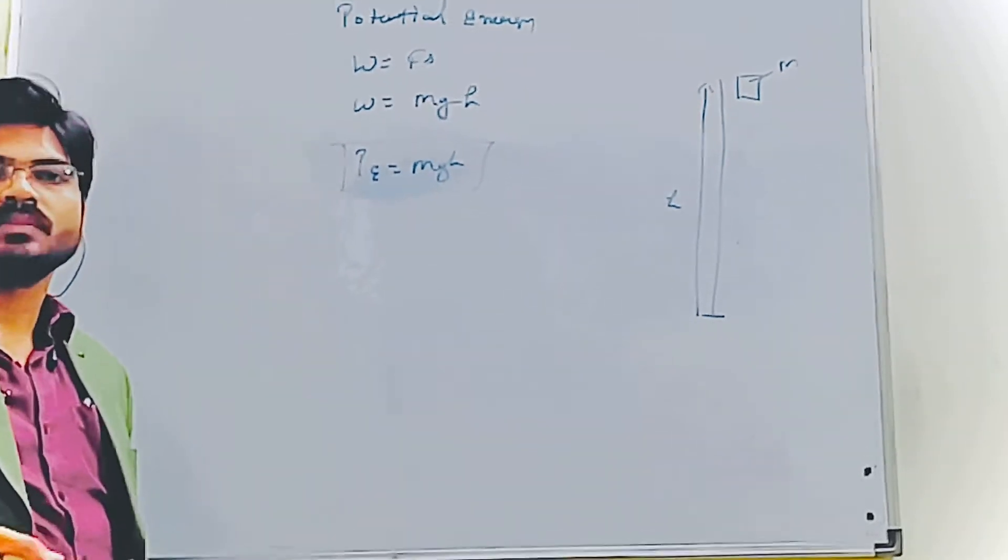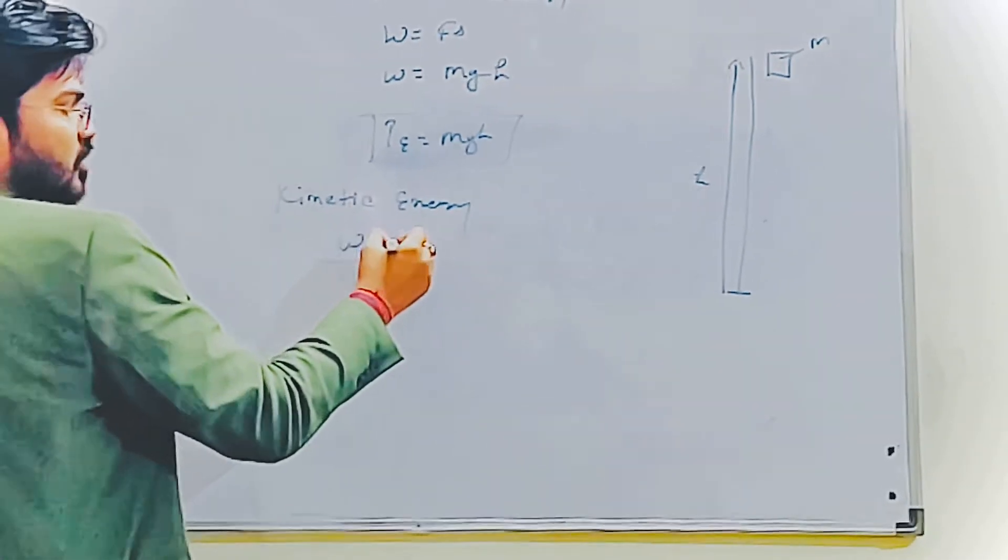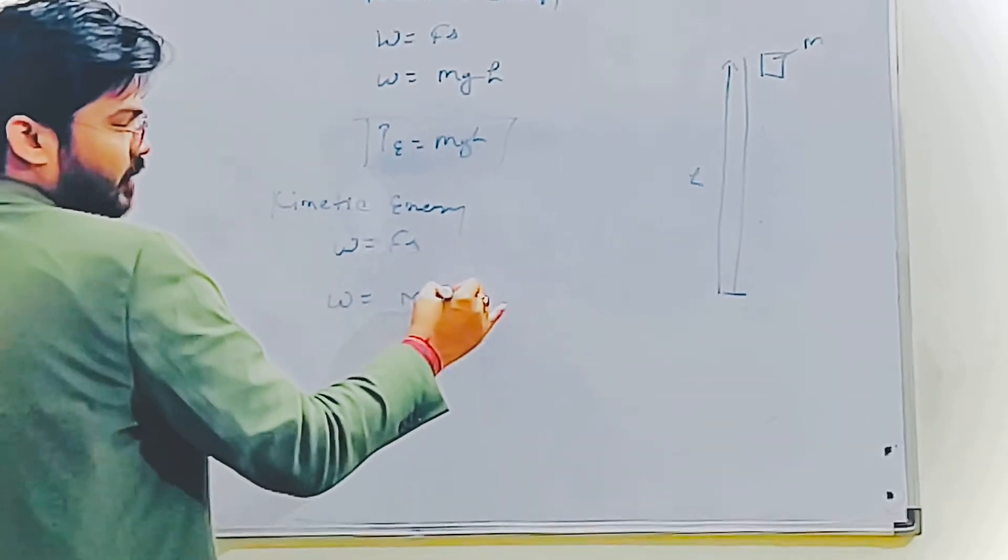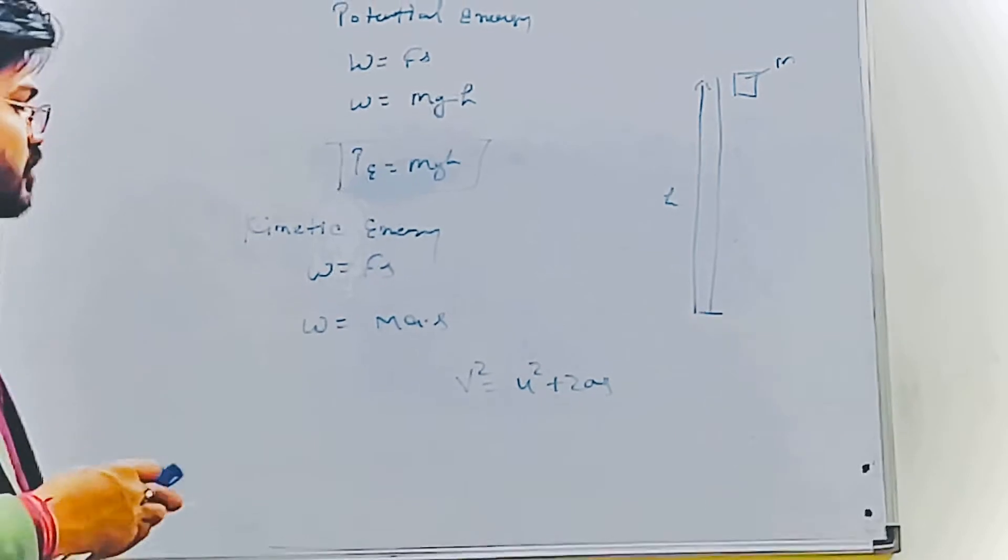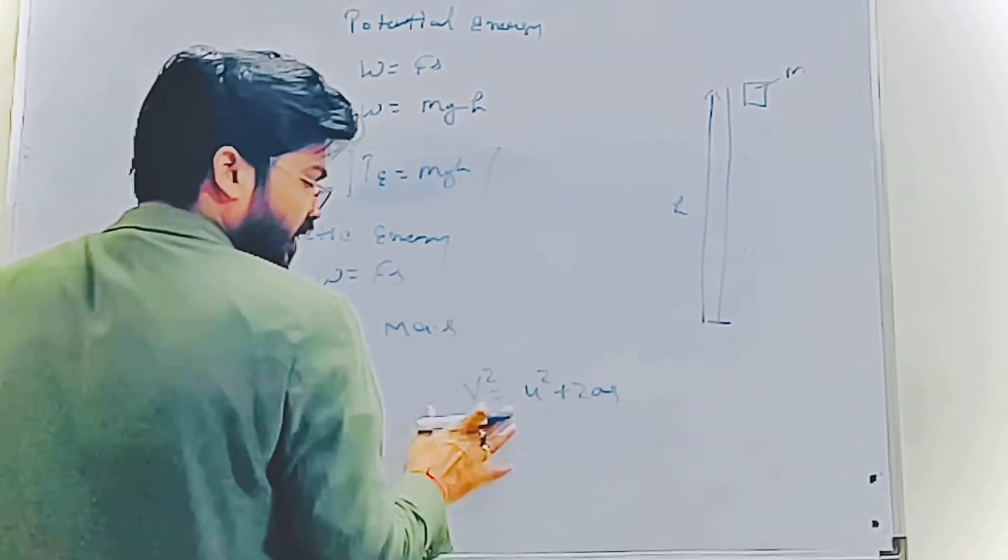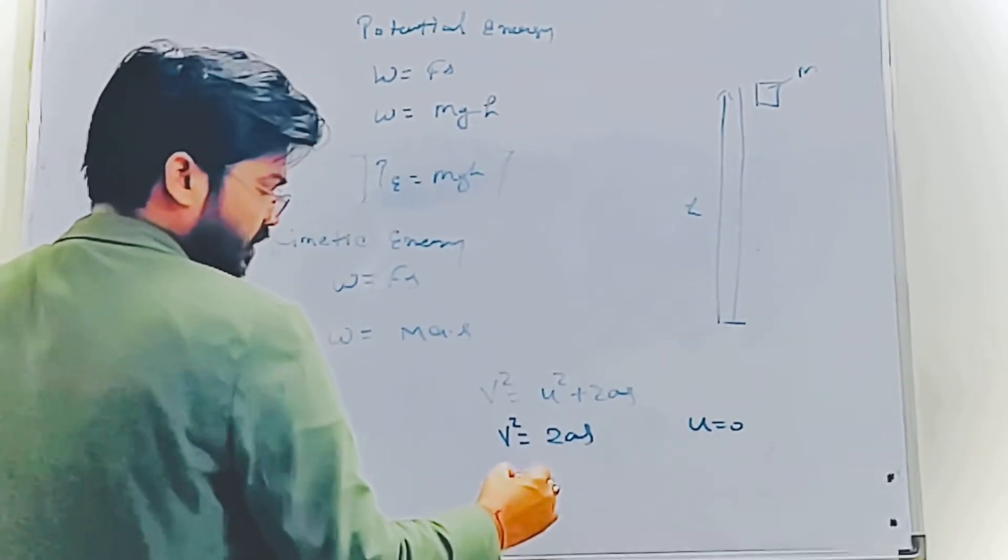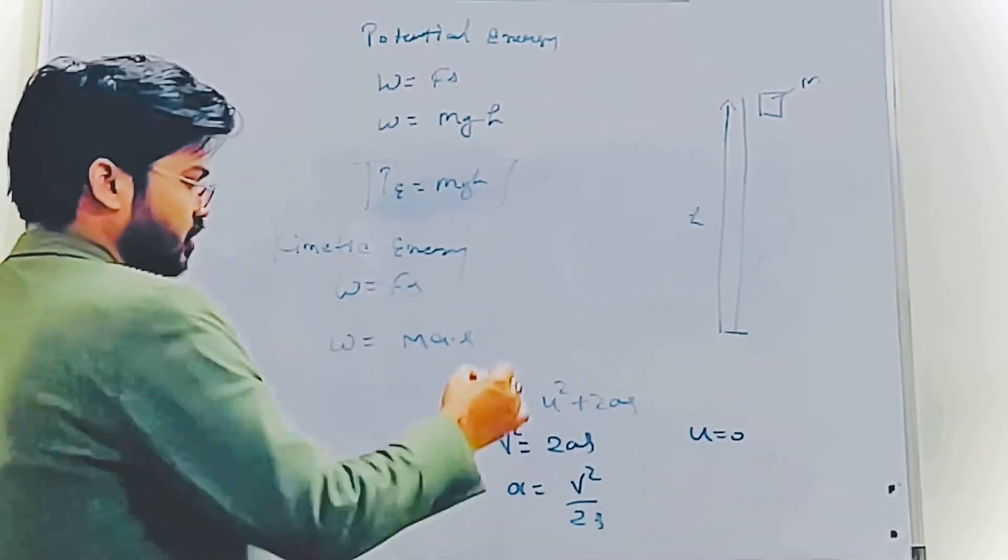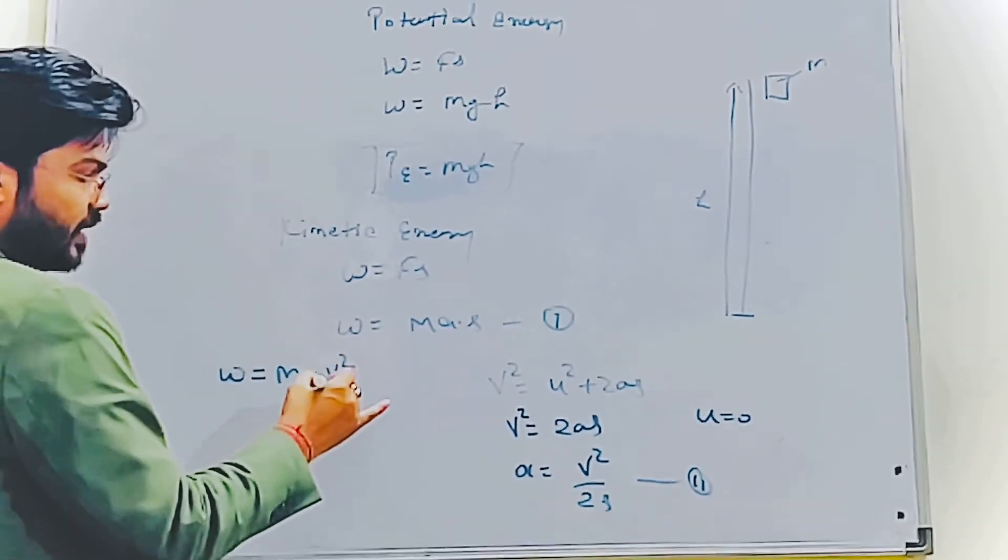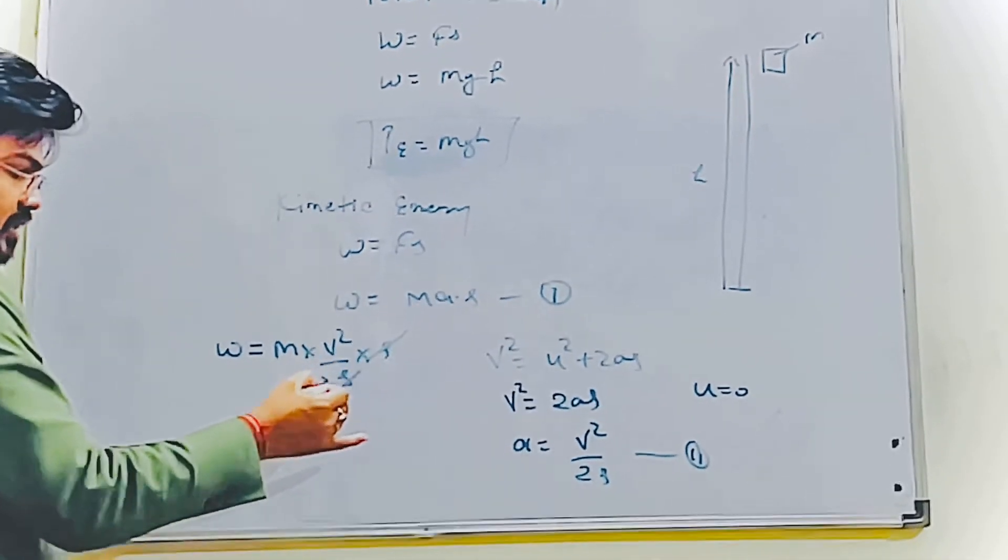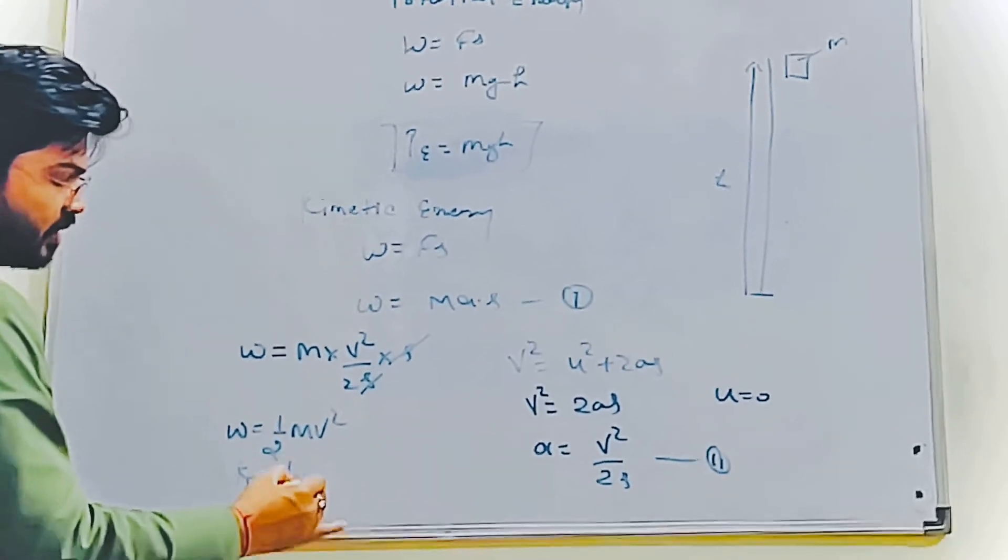Now for kinetic energy, coming to the third equation of motion: v squared equals u squared plus 2as. Now consider initial velocity zero, so v squared equals 2as. Therefore a equals v squared upon 2s. This is the first equation, and we have a second equation. Now a equals v squared upon 2s, so W equals m times a times S, which is m times v squared upon 2s times s. As s cancels, W equals half mv squared. Therefore KE equals half mv squared.